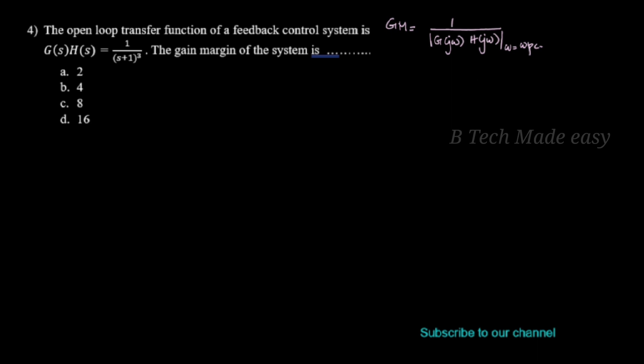Gain margin is how much the system gain can be increased without moving from the edge of stability. The given G(s)H(s) = 1/(s+1)³. We have to replace s by jω for finding the gain margin from the Bode plot. So G(jω)H(jω) = 1/(jω+1)³.